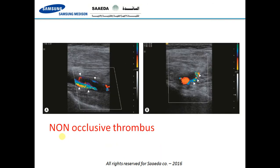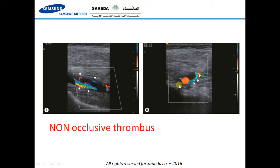Here is an example of a non-occlusive thrombus. You can see the thrombus filling most of the lumen but not all of it, and some flow still remains. In the axial cuts, you can see the artery, and the thrombus filling most of the lumen of the vein.